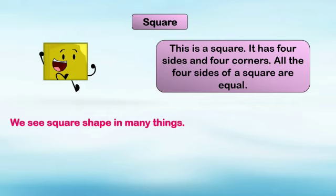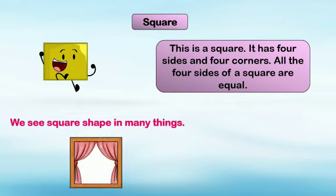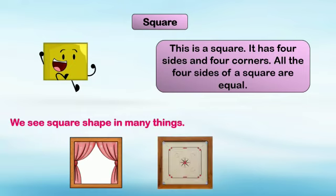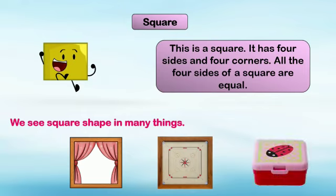Now let's see a few examples. A window looks similar to square shape. A carom board is similar to square shape. And a lunchbox — the shape of a lunchbox is square. These all are examples of square shape, and you can observe square shape in these objects.